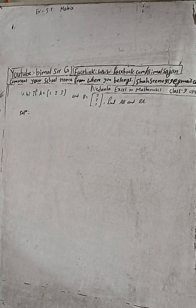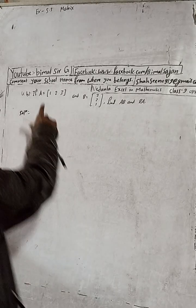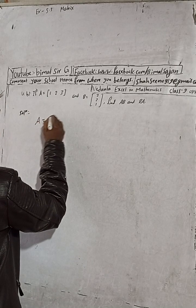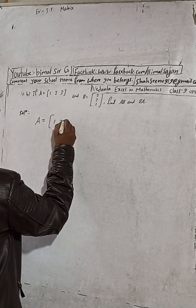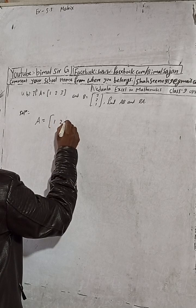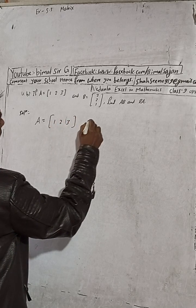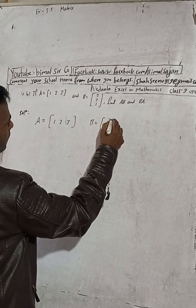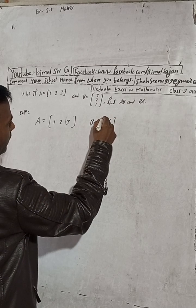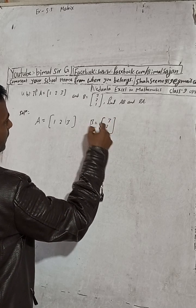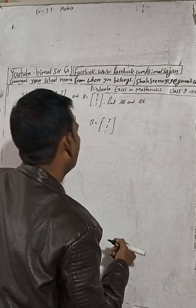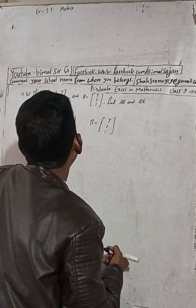Number 4b. Here, if A is equal to [1, 2, 3], first let me write this given matrix. A is equal to [1, 2, 3] and B is equal to [3, 2, 1]. So what is there to find? There is to find A·B.